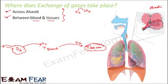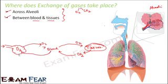Inside the tissues, cells undergo cellular respiration, producing carbon dioxide as a byproduct. The cells give this carbon dioxide to the blood. The blood vessels carry the carbon dioxide back and supply it to the alveoli. So exchange of gases takes place between alveoli and blood vessels — that is one exchange — and again between blood vessels and tissues.